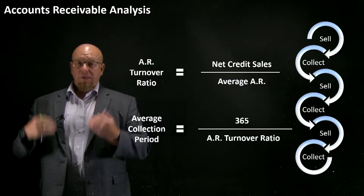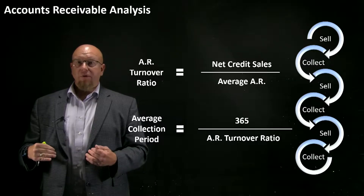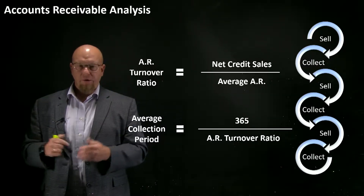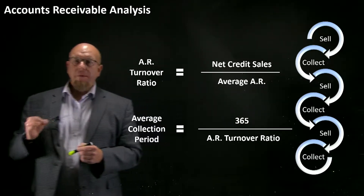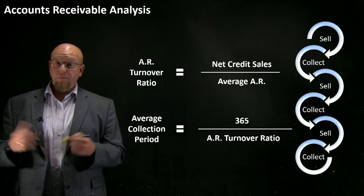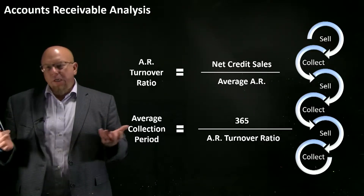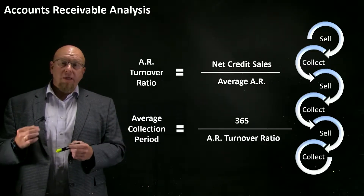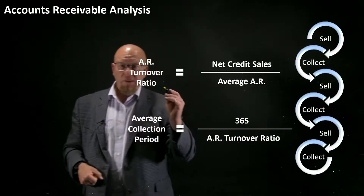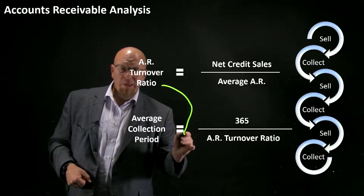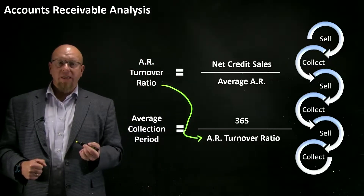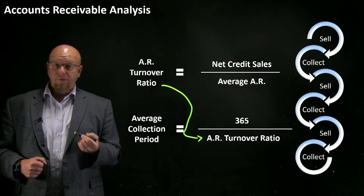Generate receivables, collect them — so accounts receivable goes down to zero. Generate more receivables, collect those, back to zero. We're wondering how many times does that turnover occur during a particular time period, most likely a year. Once we know that turnover ratio, we can use it to figure out the average collection period, or the average number of days it takes a company to collect its receivables.